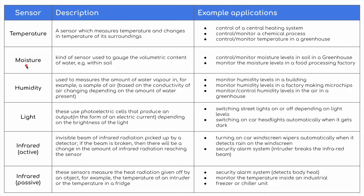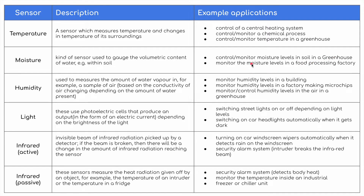Moisture sensors: this is a kind of sensor used to gauge the volumetric content of water, usually in something like soil. Again, they can control and monitor moisture levels in soil in a greenhouse, or monitor the moisture levels in a food processing factory.